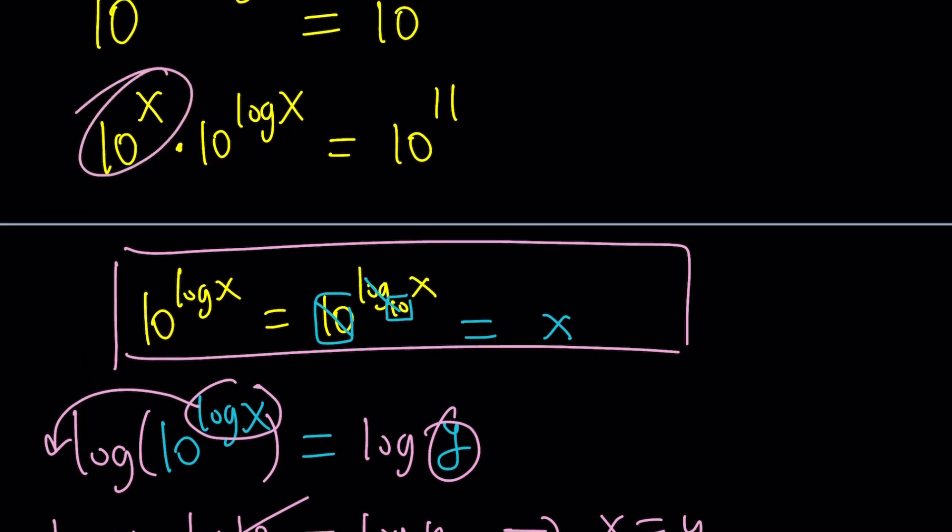And we also have 10 to the power x. So this gives us x times 10 to the power x equals 10 to the power 11. Obviously, I wanted to write the x first, because that fits a certain format that I'm going to be using.